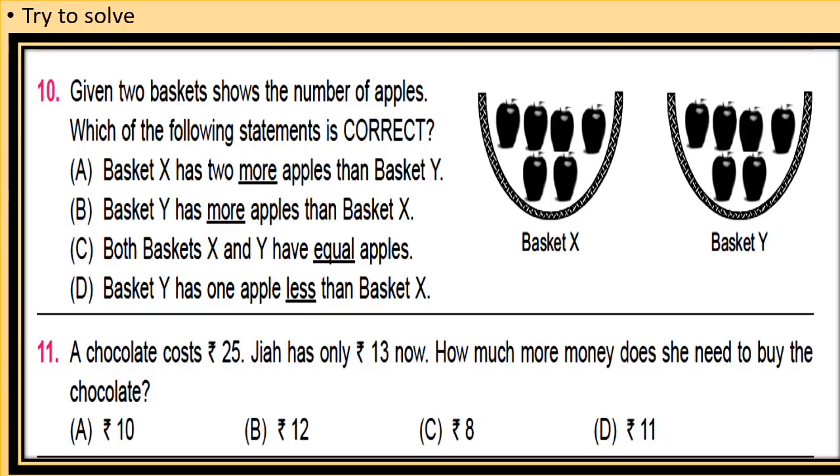Question number 10: Given two baskets shows the number of apples. Which of the following statements is correct? Look at the figure. Two baskets are given, basket X and basket Y. Option A is: basket X has two more apples than basket Y. Basket Y has more apples than basket X.